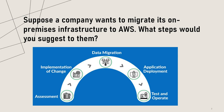Suppose a company wants to migrate its on-premises infrastructure to AWS. What steps would you suggest? The first step would be to evaluate the existing infrastructure and identify which components are critical for the business.